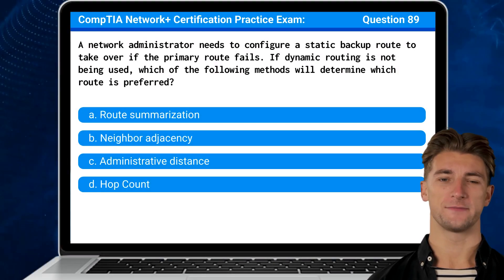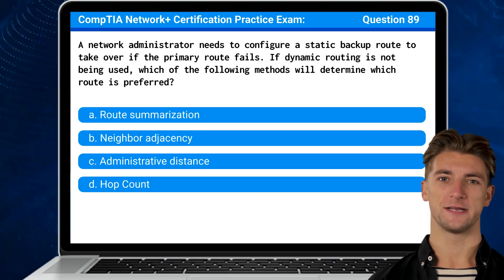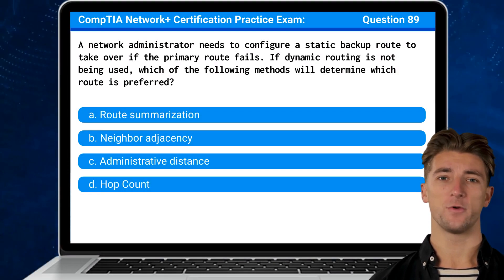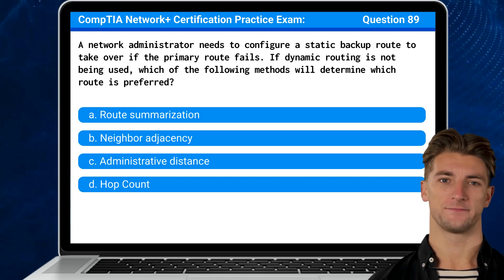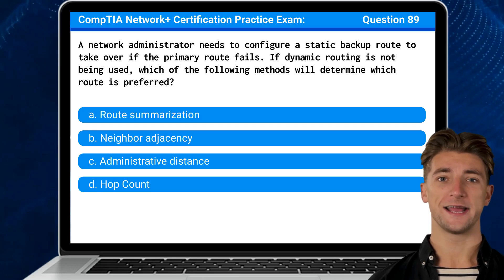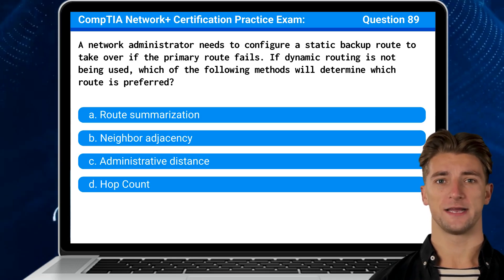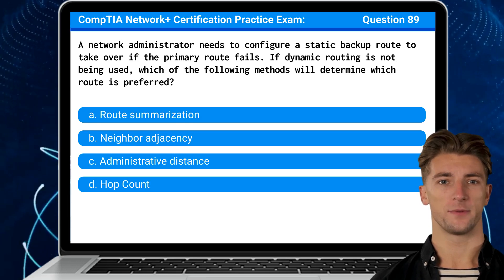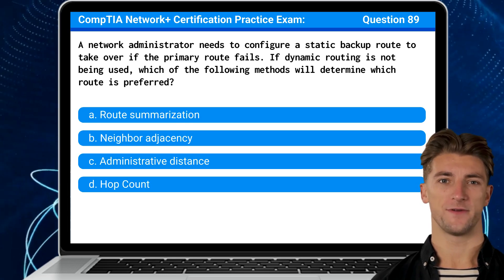Question 89. A network administrator needs to configure a static backup route to take over if the primary route fails. If dynamic routing is not being used, which of the following methods will determine which route is preferred?